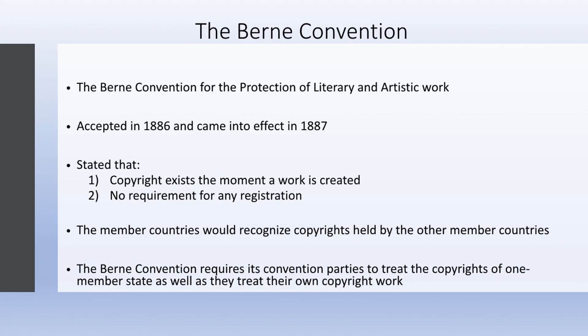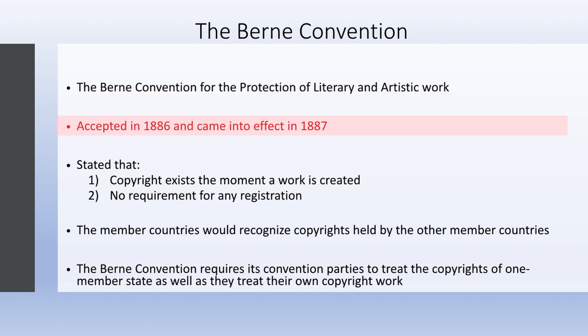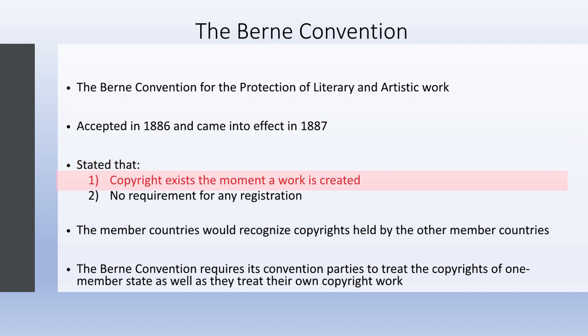Hello everyone. Today in this video we are going to learn about the Berne Convention. The Berne Convention for the protection of literary and artistic work was accepted in 1886 and came into effect in 1887. It stated that copyright exists the moment a work is created, with no requirement for any registration.